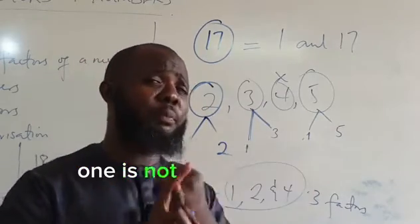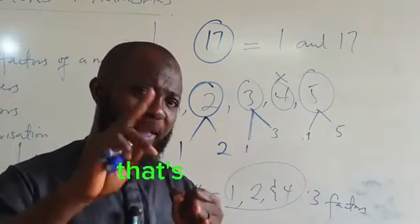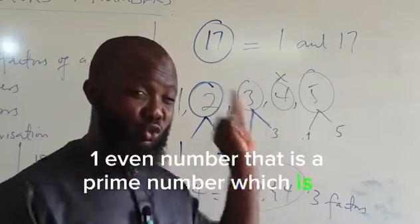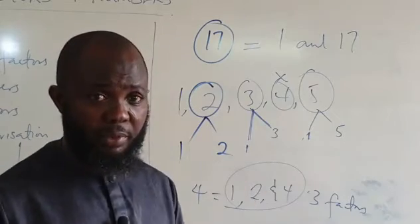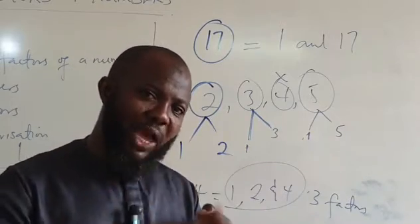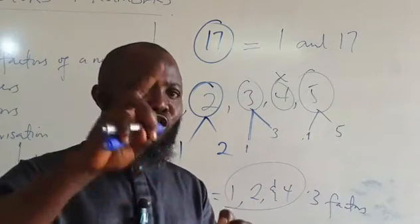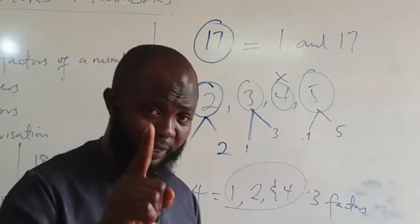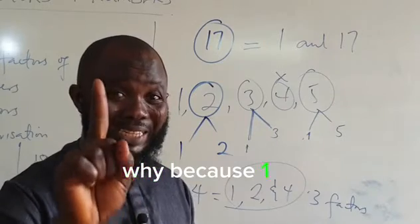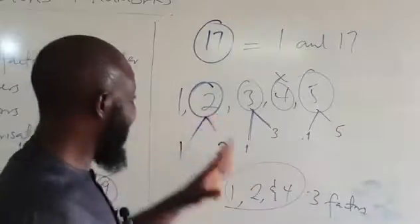Take note: 1 is not a prime number. 2 is a prime number and also an even number — it's the only even number that is prime. All other even numbers are not prime numbers. Also, not all odd numbers are prime numbers, because 1 is an odd number and it is not a prime number.